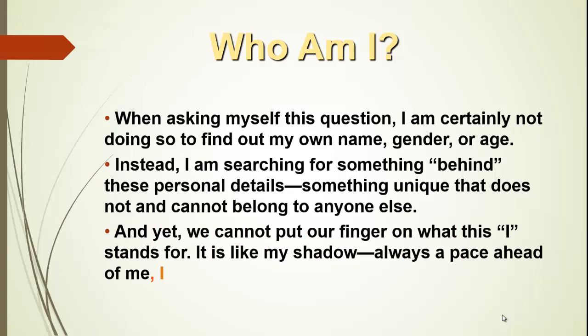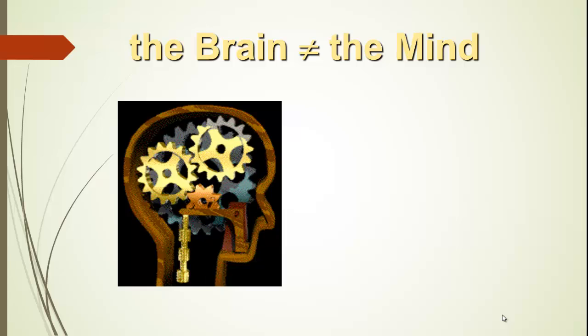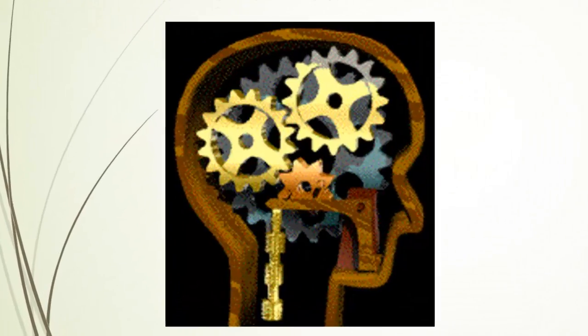We cannot put our finger on that I. It's like a shadow, always a pace ahead of you. So the question is, what is this I? Is it located in the brain? Is it located in the mind? Where is it?